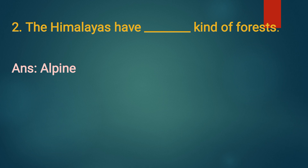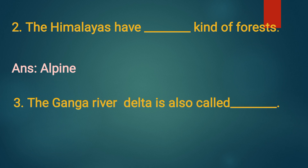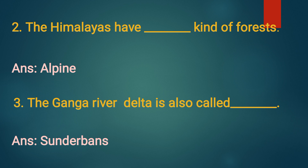The Himalayas have alpine kind of forests. Third one: the Ganga river delta is also called dash. Answer: Sundarbans. The Ganga river delta is also called Sundarbans.